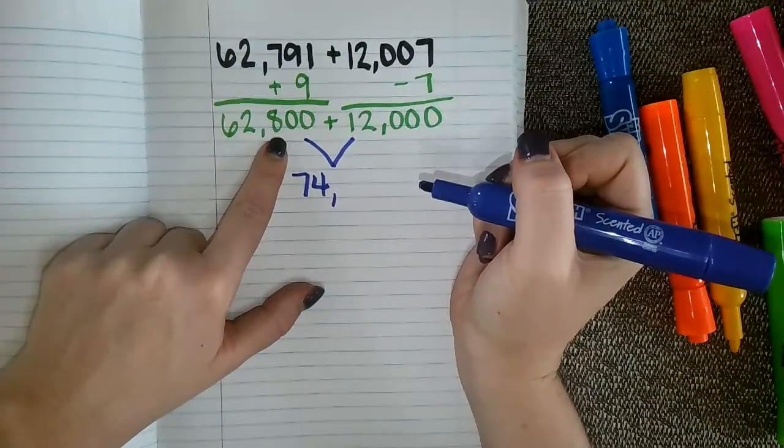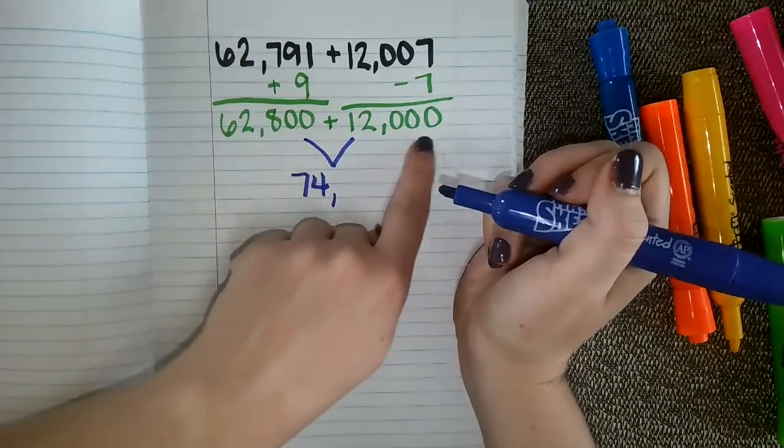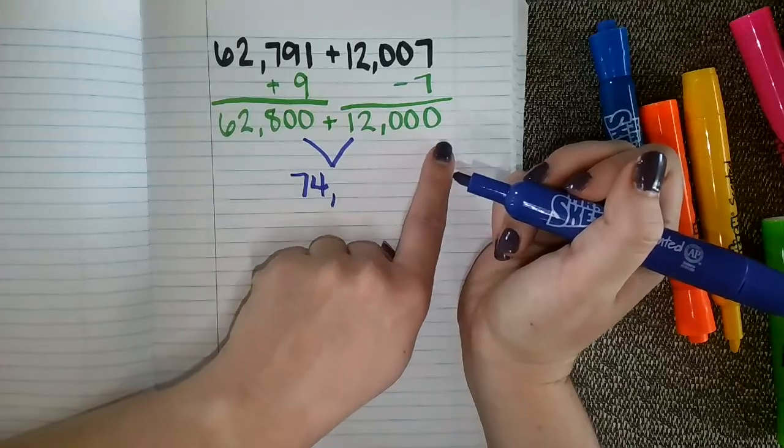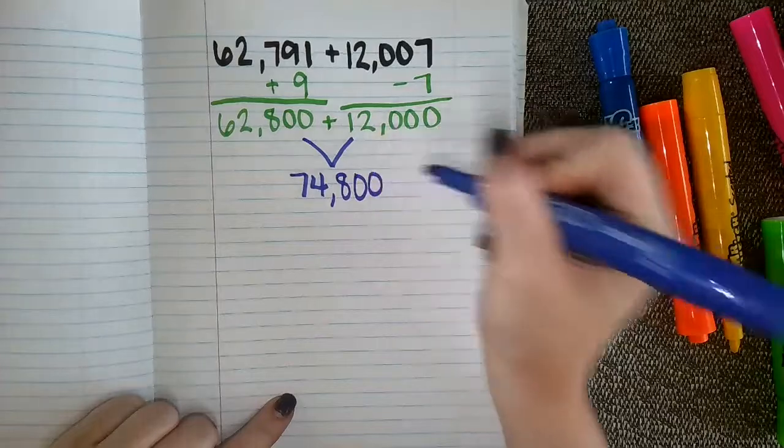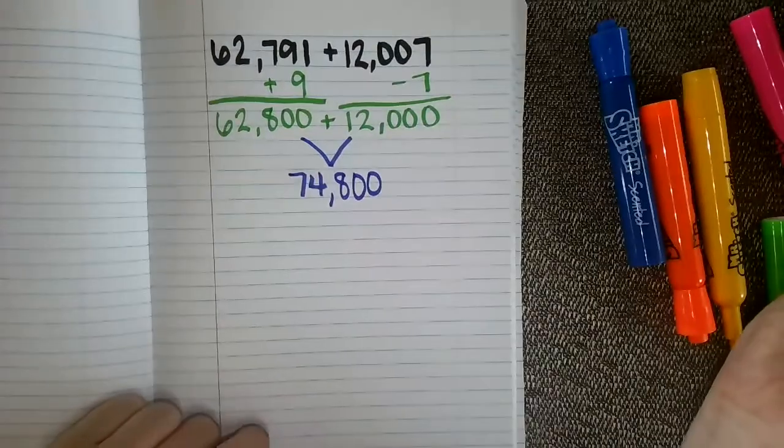And then I just have an 8 in my hundreds place and I have zeros in my hundreds, tens and ones place over here. So I can just look at those two numbers and know that that is going to equal seventy-four thousand eight hundred.